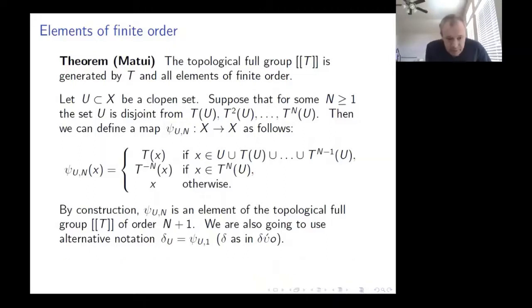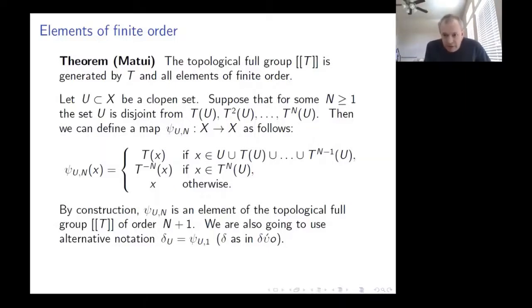This is a very general construction. It shows you can embed a symmetric group on any number of elements into any topological full group. As a consequence, the topological full group contains a copy of every finite group. So the structure is not simple. These groups were introduced as a classification tool, but when some property is shared by all of them, it is not helpful for classification.